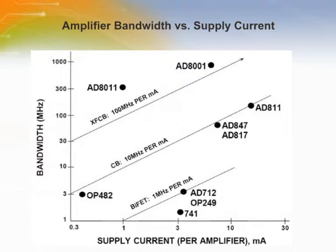In the case of duals, triples and quads, the current per amplifier is used. The Analog Devices BIFET process, which produced the AD712 and OP249 — 3 MHz bandwidth, 3 mA current — yields about 1 MHz per mA. The CB complementary bipolar process, AD817, AD847, AD811, etc., yields about 10 MHz per mA of supply current. FTs of the CB process PNP transistors are about 700 MHz and the NPNs about 900 MHz.